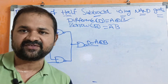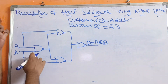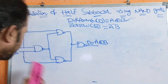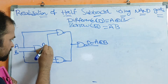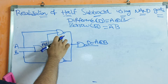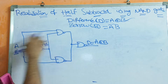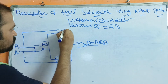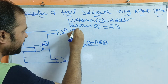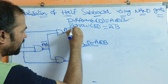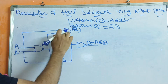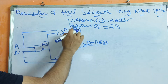Now let us check whether our diagram is correct or not. We know the formula for NAND gate — it produces (A·B)̄ as the output. For gate 1, inputs are A and B, so it produces (AB)̄ as output. For the second NAND gate, the inputs are A and (AB)̄. So the output is A·(AB)̄, whole bar.